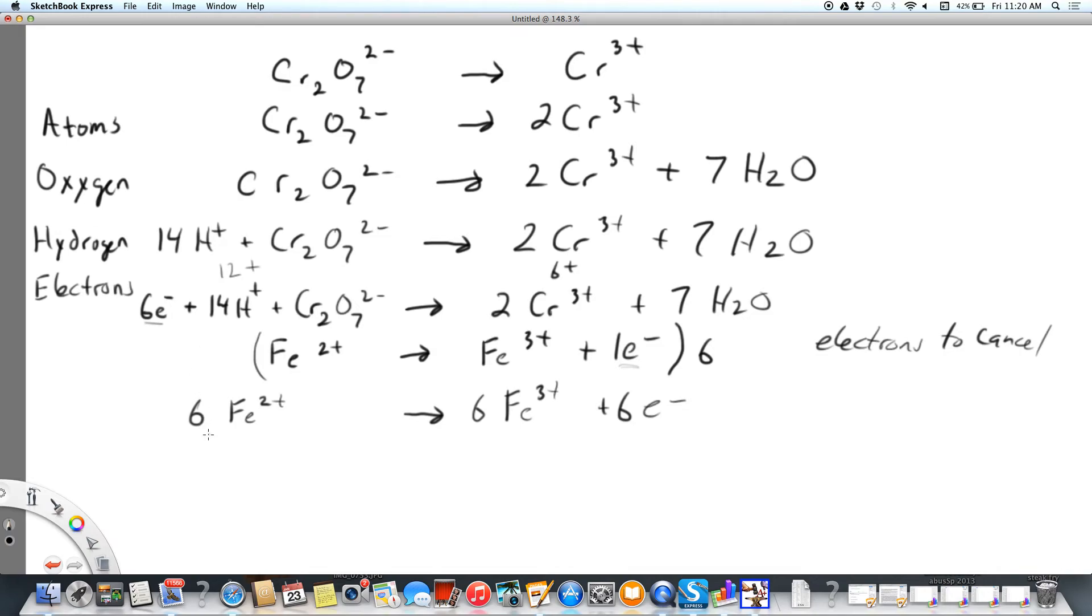Now I'm just going to add these two equations together. If my electrons are the same but on opposite sides, I know I've done this right. So I'm going to get rid of my electrons here and here, and I'm just going to bring everything down. A lot of times you might have hydrogen on both sides, so you'll have to cancel it out so that you don't have hydrogen on both sides or water on both sides.